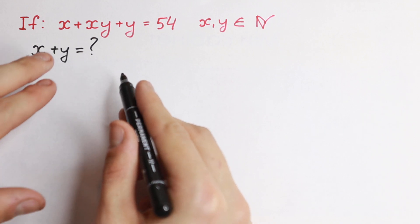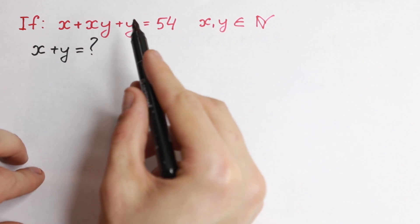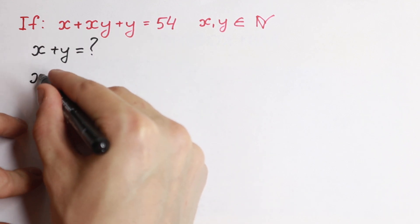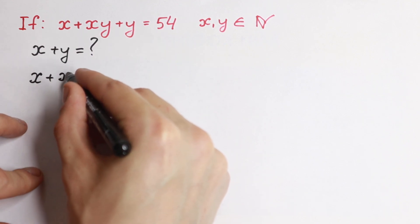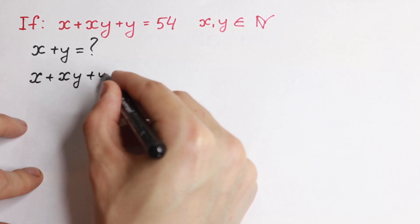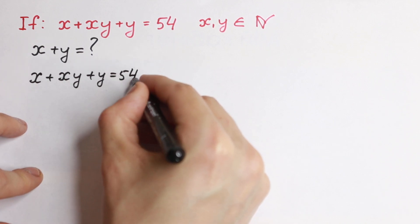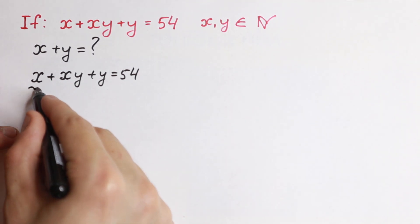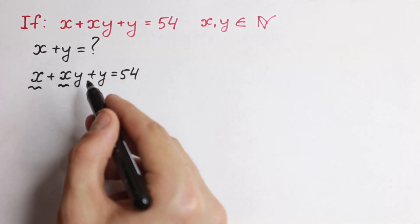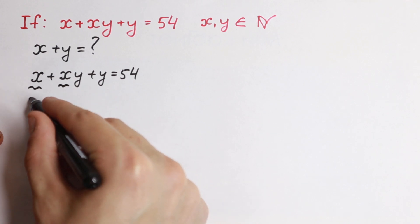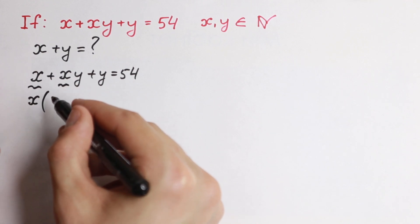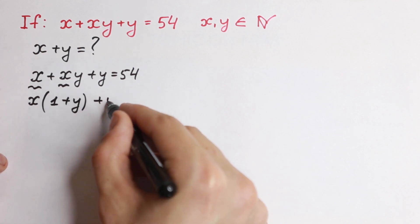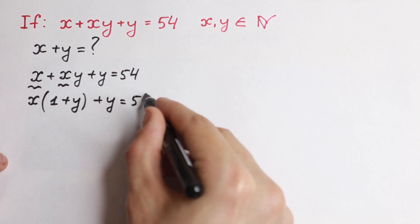First of all we need to use a little trick right here in this expression. So we have x plus xy plus y equal to 54. Let's factor out x from here. We have x and x, so we can factor it out: x times (1 plus y), and of course plus y, equal to 54.